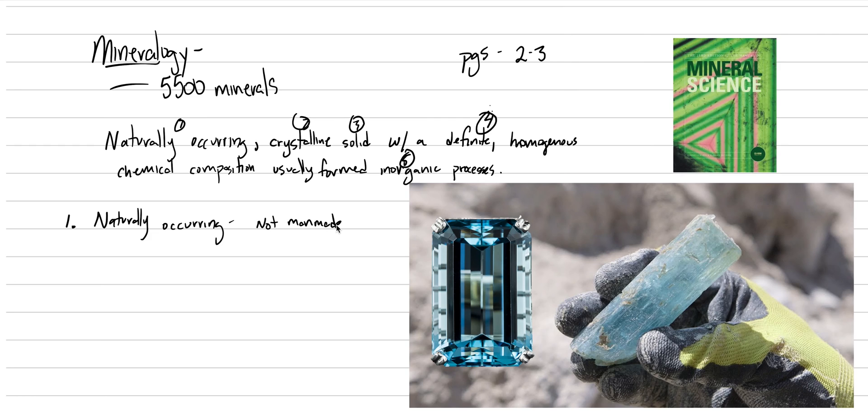The second thing here to unpack, let's actually go with solid, since that's pretty obvious. It's not a gas. It's not a liquid. So there are things like oil that occur in nature that are naturally occurring. They have chemical composition. And I guess that's sort of organic. But it's a liquid and so we wouldn't consider it a mineral.